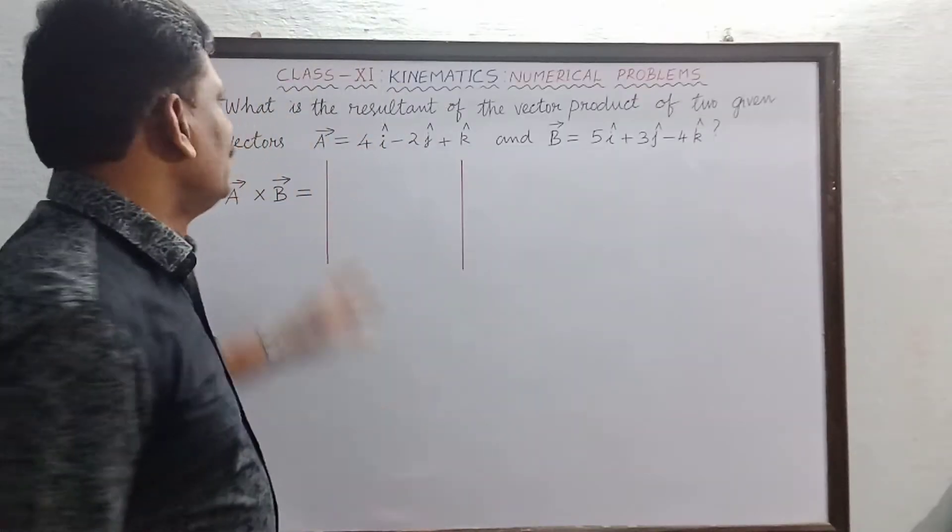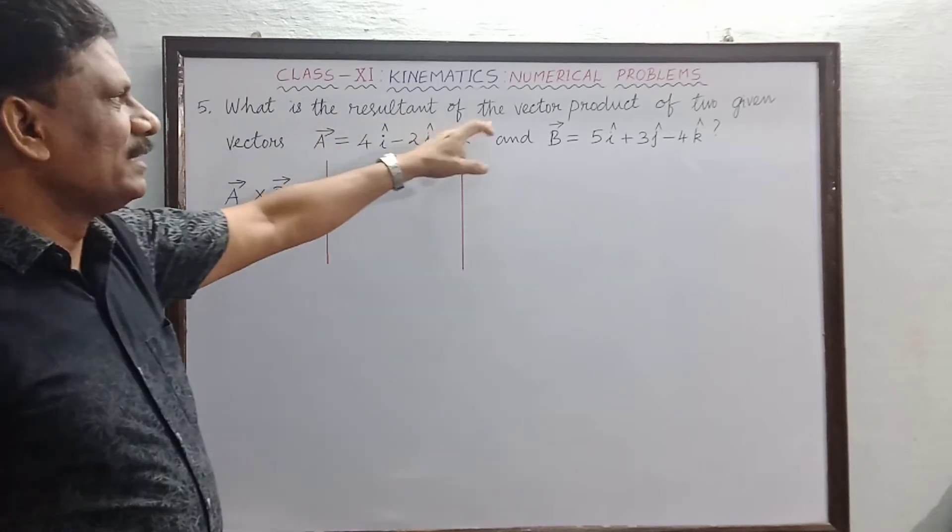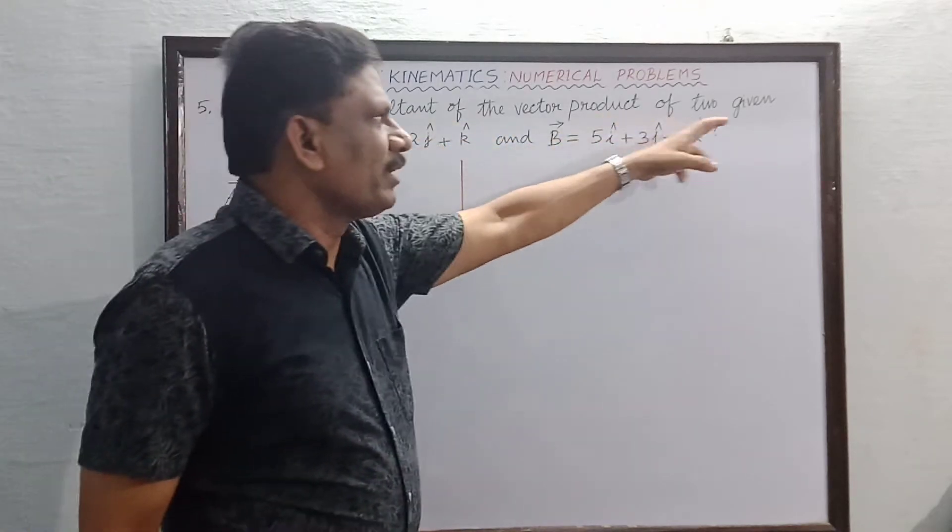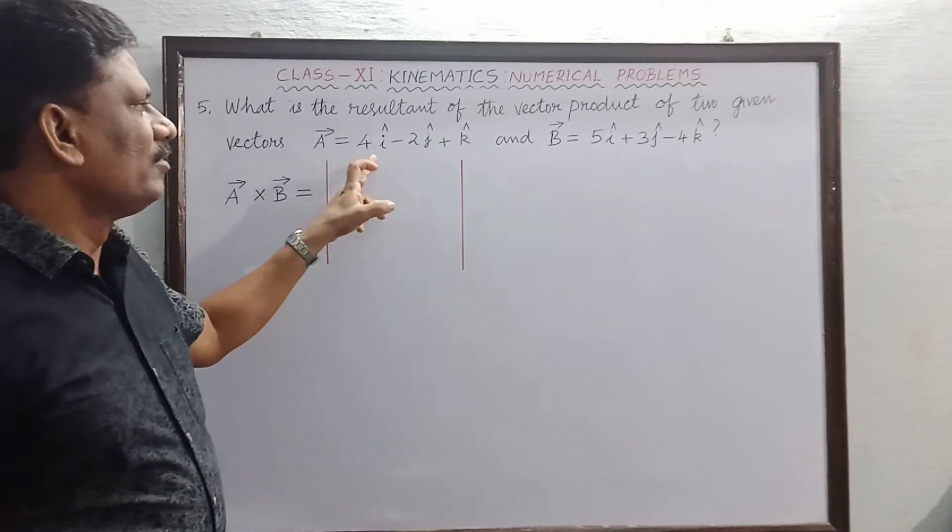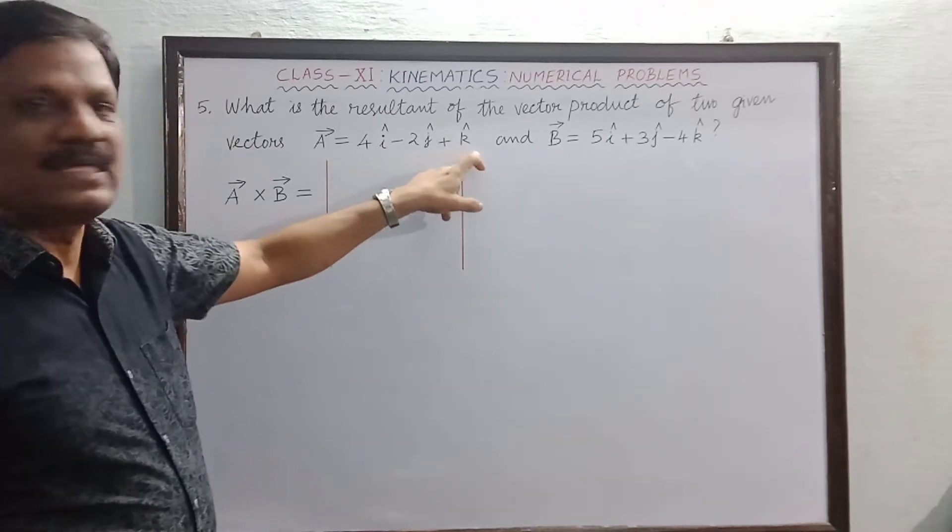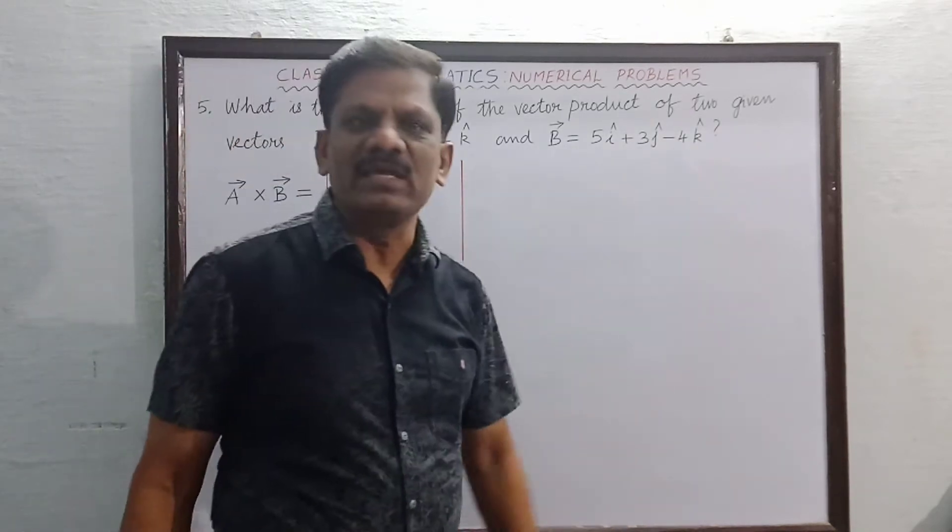Hi students, now fifth sum we are going to do. What is the resultant of the vector product of two given vectors? A vector equal to 4i minus 2j cap plus k cap, and B vector is equal to 5i cap plus 3j cap minus 4k cap.